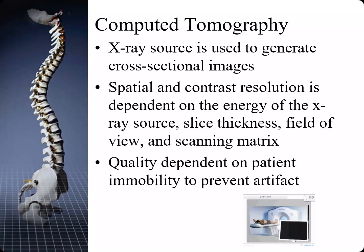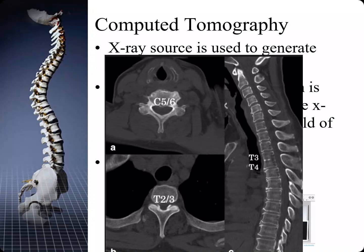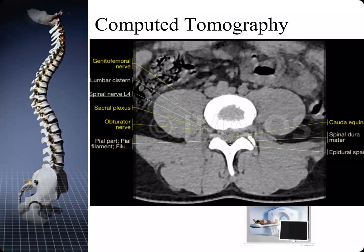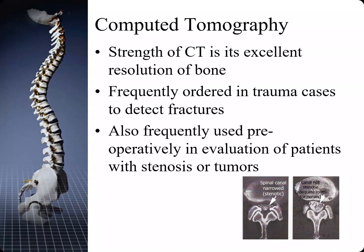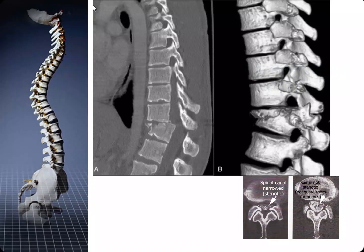Computed tomography allows us to look at the spinal column in three dimensions. We get cross-sectional images that generate the information needed to evaluate the spine. Spatial and contrast resolution is dependent on the energy of the x-ray source, the slice thickness, the field of view, and the scanning matrix used. The strength of CT is its excellent resolution of bone and the elimination of superimposition of other body parts. CT is frequently used in trauma cases to detect fractures and also preoperatively in evaluation of patients with stenosis or tumors.